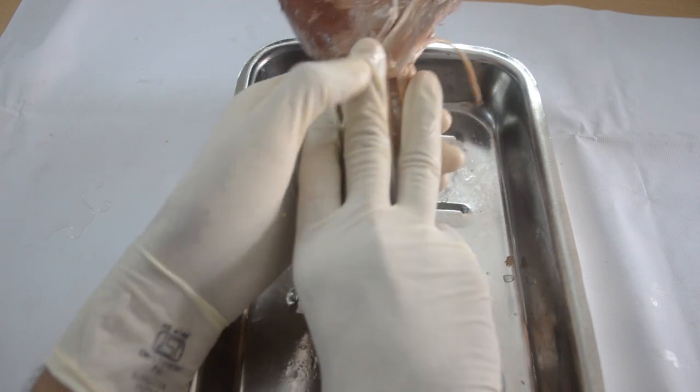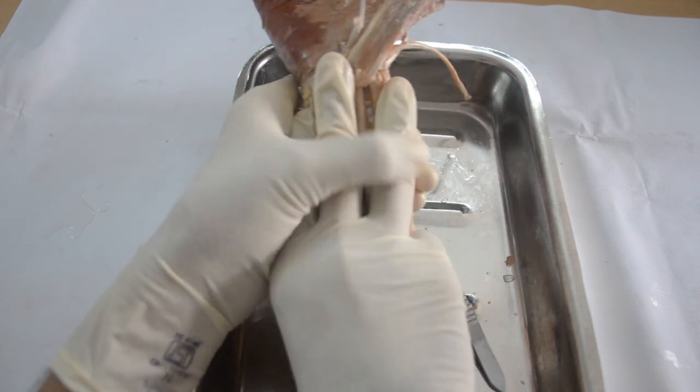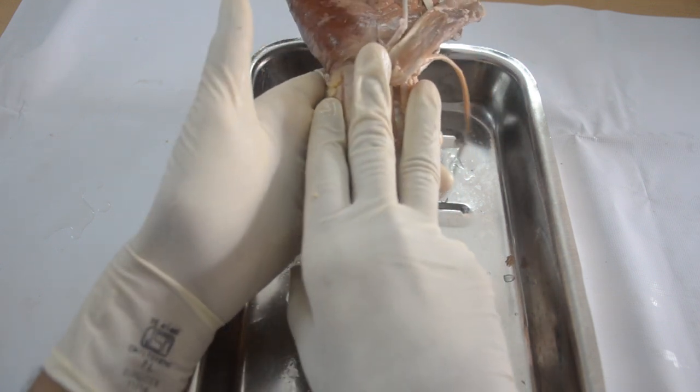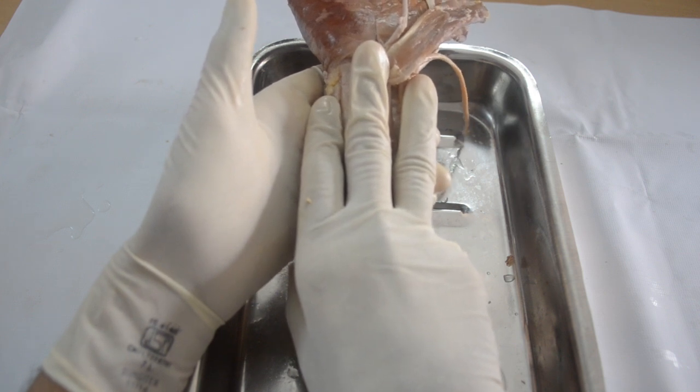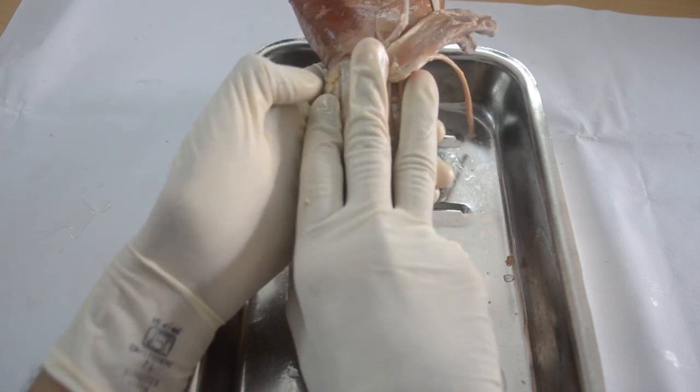ulnar artery, median nerve, radial artery, and radial nerve. This is how you need to remember the relation of neurovascular bundle in the forearm along its terminal part.